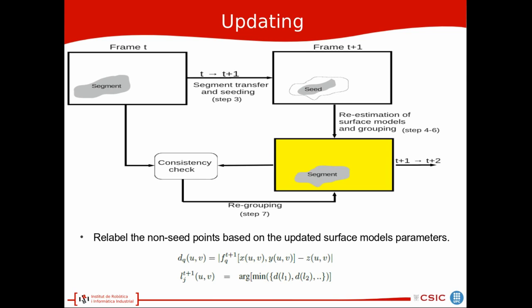For relabeling we simply determine which segment is giving the minimum distance between the actual depth and the estimated depth. These are the estimated depths using different model parameters and we determine the label which gives us the minimum distance. And use this as the new label for the non seed points.